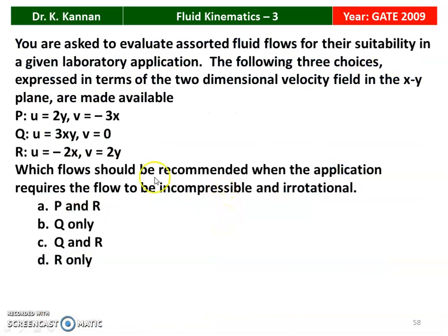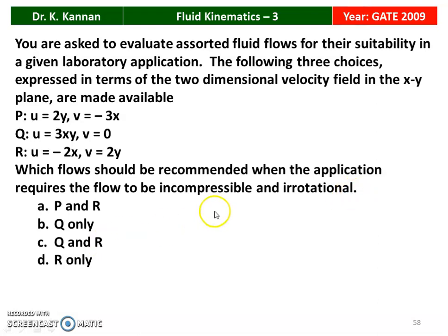The next question from the 2009 question paper: you are asked to evaluate assorted fluid flows for their suitability in a given laboratory application. Three choices expressed in terms of two-dimensional velocity fields in the x-y plane are given: P — U = 2y, V = -3x; Q — U = 3xy, V = 0; R — U = -2x, V = 2y. Which flow should be recommended when the application requires the flow to be incompressible and irrotational? The correct answer is R only — only choice R satisfies both requirements.